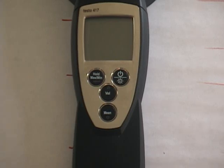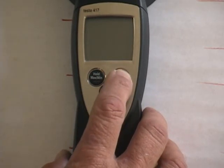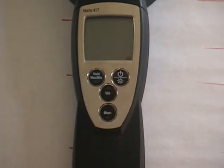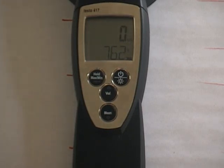Turn the instrument on by pushing this on-off button right here, hold it a minute, and you'll see the display come on. It's reading right now in feet per minute and temperature 76.2 degrees Fahrenheit on the bottom of the numeric display.